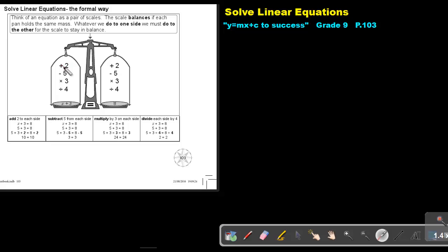So if we add 2 on this side, we must add 2 on this side. If we subtract 5 on this side, we must subtract 5 on this side. There's your equal sign. This is your two sides.